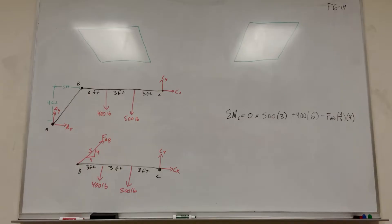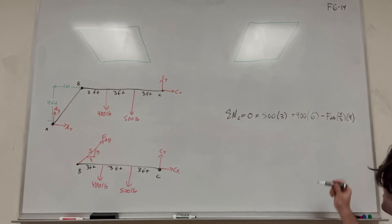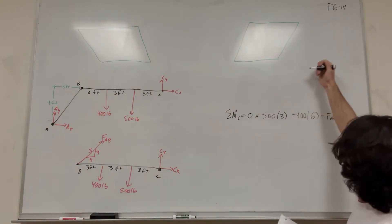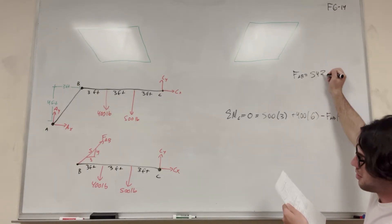So this is our total equation here. All we have to do is move force AB over, do these, and then multiply over. I'm going to trust you guys to do the math on this, and just to save time, we can say that force AB is equal to 542 pounds.